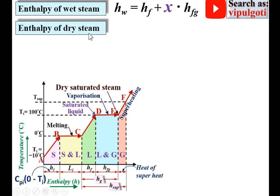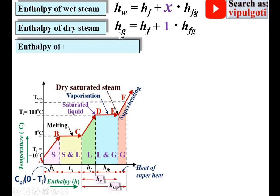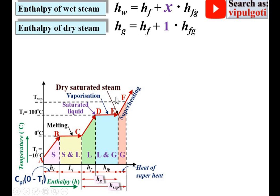Next, enthalpy of dry steam, sometimes called the enthalpy of dry saturated steam. Dry saturated steam is exactly at point E, where the dryness fraction is equal to 1. If you put x equal to 1 in the formula, then Hg equals Hf plus Hfg. From the figure, you can understand the enthalpy of dry saturated steam with reference to point C is Hf plus Hfg.